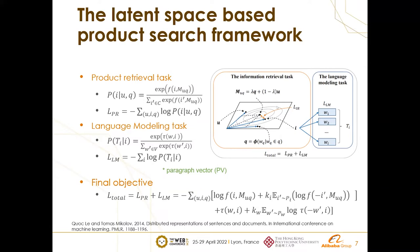We take the popular model paragraph vectors (PV) as our example, because the order of terms in queries or titles does not matter greatly. PV assumes that words and tokens can be generated from entities — in our context, this refers to products. Finally, we maximize the likelihood for both tasks to obtain our final objective, and negative sampling is employed to compute the log likelihood for computational efficiency.